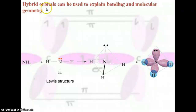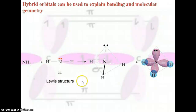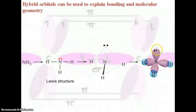The power of hybrid orbitals is they can be used to explain both bonding and molecular geometry. From our Lewis structure, we know we're going to have a tetrahedral shape. With sp3 hybridization, it shows the exact shape and makes sense with our s, p, d, and f atomic orbitals.